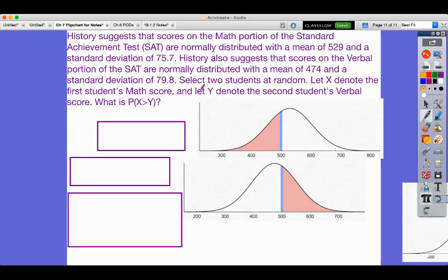Looking at history, the math portion of the SATs average is 529, standard deviation 75.7. Verbal mean 474, standard deviation of 79.8. Select two students at random. This is important that they're two different students that are randomly selected, so that way they're independent of each other. If I took the same student, then the probabilities, because these are not independent for that same student, we wouldn't be able to use the combined distributions.